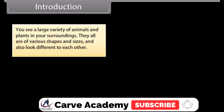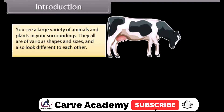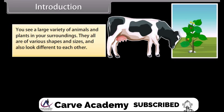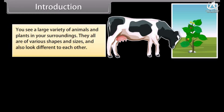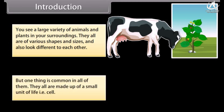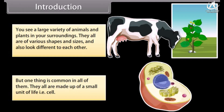Introduction: You see a large variety of animals and plants in your surroundings. They all are of various shapes and sizes and also look different from each other. But one thing is common in all of them — they all are made up of a small unit of life, that is the cell. So in this module we are going to learn about cell and its structure.